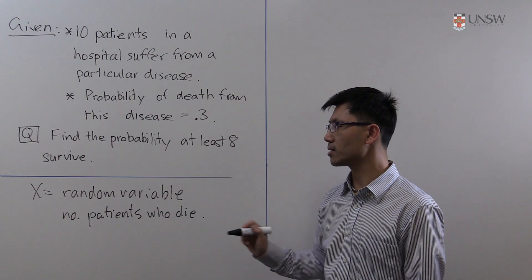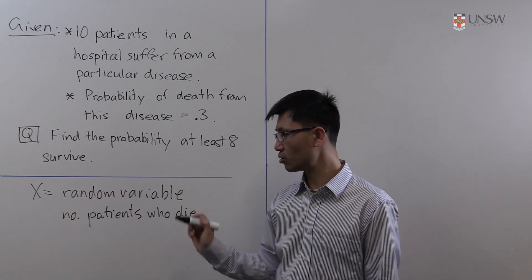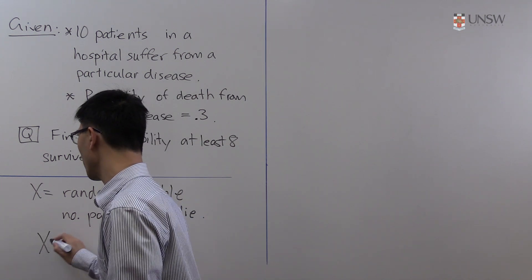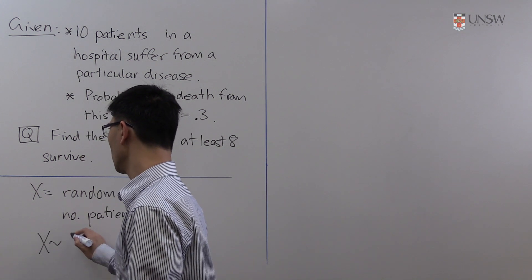The key point to note here is that this X is binomially distributed. So let me write down the notation for that first. X ~ B, and the binomial distribution depends on a couple of parameters.